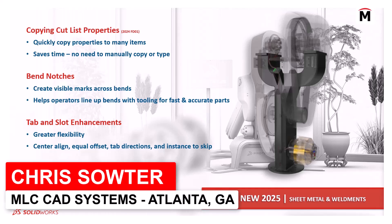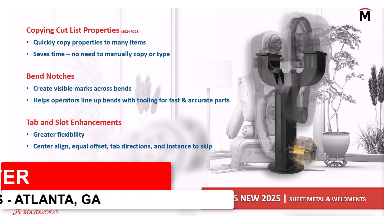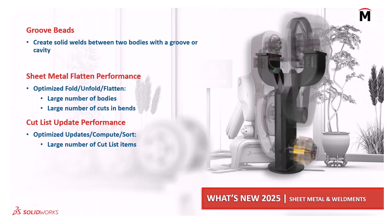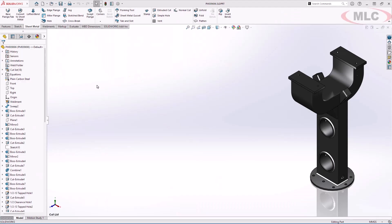Let's take a look at what's new in SOLIDWORKS 2025 with sheet metal, weldments and structure systems. In this demo you'll see how SOLIDWORKS 2025 helps you save time by quickly copying all cut list properties to many items. It helps you streamline your downstream manufacturing processes with bend notches, gives you higher flexibility in your tab and slot workflows, and allows you to use multiple length edge flanges without having to edit the flange profile. You can now create a new type of weld bead called groove beads between two solid bodies. Sheet metal performance has dramatically improved for parts with large amounts of items, and so have the cut list updates. Now let's get started.